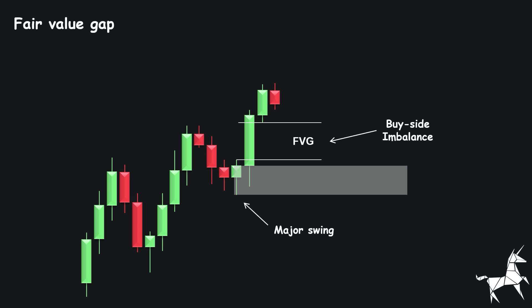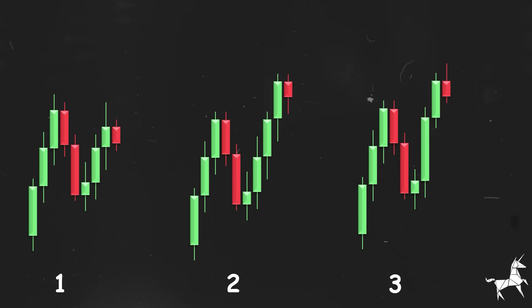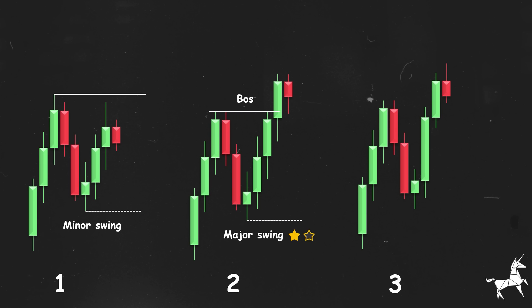Breaking below a major swing that created an imbalance signals a significant shift in trading momentum and a potential reversal. The same concept applies to bearish scenarios. Here we have three price examples. The first one does not show a break of structure or an imbalance, so it is considered a minor swing. The second one is the origin of this breakout but lacks the imbalance; therefore, it is considered a major swing but with only one star. The third one is the origin of the breakout and has created an imbalance, making it a major swing with two stars.